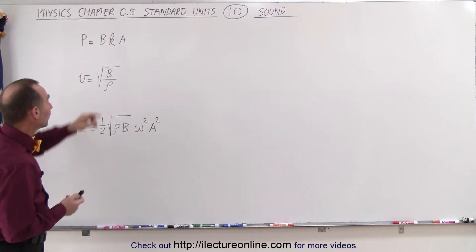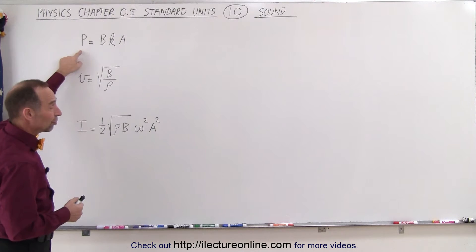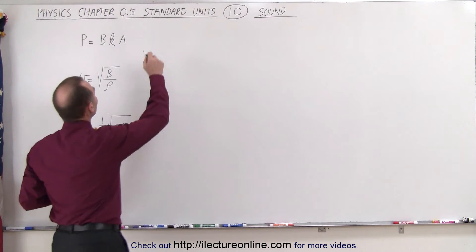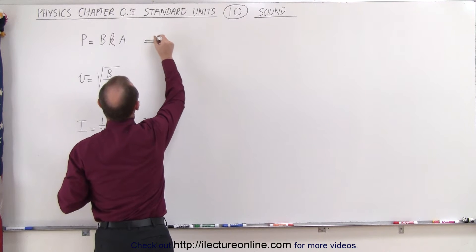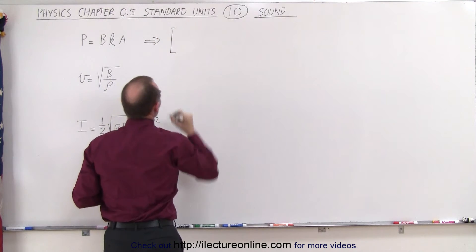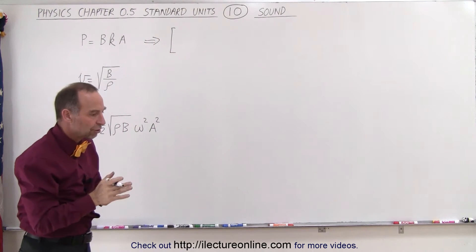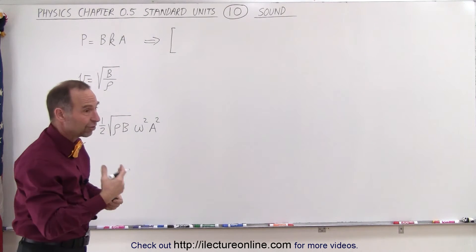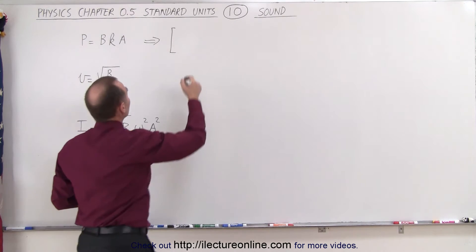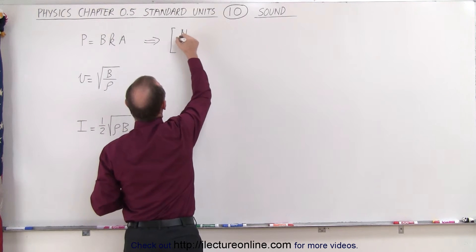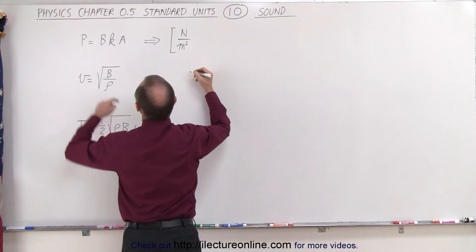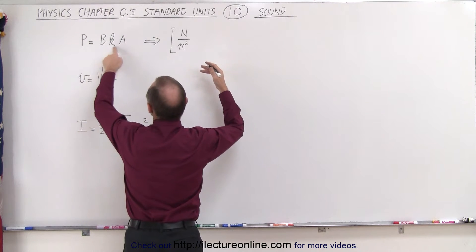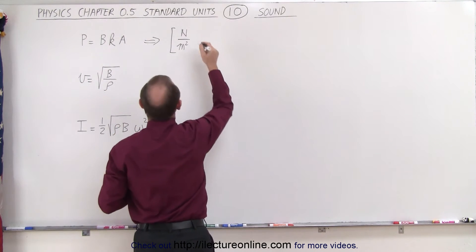Let's check the units. For pressure, we expect to see newtons per square meter. The units of the bulk modulus are units of pressure, because it is stress over strain, and the units of stress are pressure — so it would be newtons per square meter. That's already the units we're expecting for pressure, so we'd be done if the remaining terms cancel out.